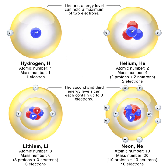The neutron is essential to the production of nuclear power. In the decade after the neutron was discovered by James Chadwick in 1932, neutrons were used to induce many different types of nuclear transmutations. With the discovery of nuclear fission in 1938, it was quickly realized that if a fission event produced neutrons, each of these neutrons might cause further fission events in a cascade known as a nuclear chain reaction.